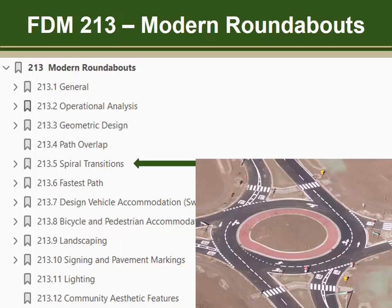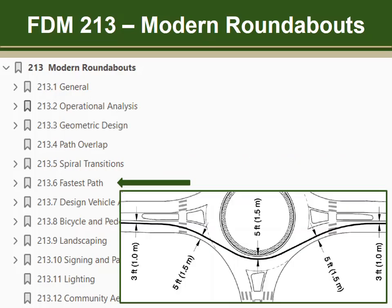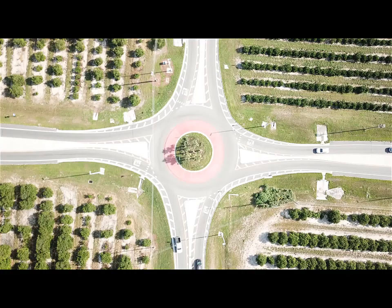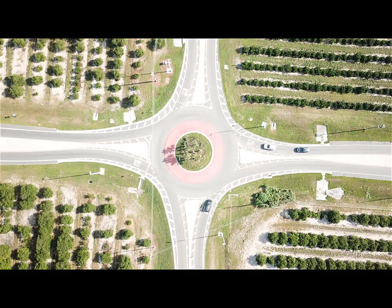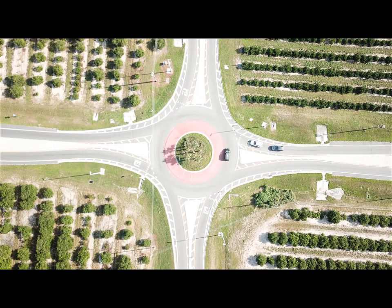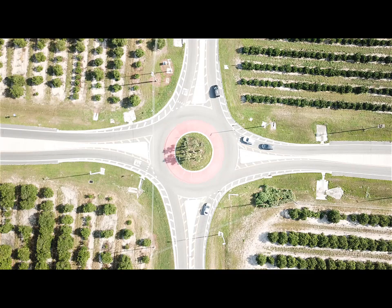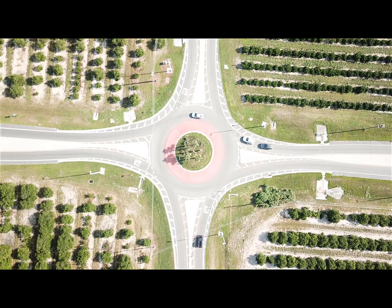Do not use a spiral transition unless it is clearly warranted. Fastest path checks assure that the appropriate entering and travel speeds are achieved; this is critical for both safety and operational performance. The natural path illustrated in this diagram is also shown in drone video of Hunt Brothers. The fastest path is the smoothest, flattest path possible for a passenger vehicle to traverse through the roundabout, and represents the theoretical attained speed based on the geometrics.